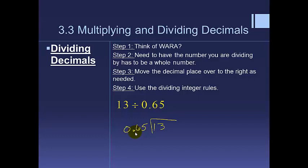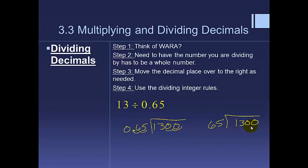Let's try 1.3 ÷ 0.65. I need to move the decimal in 0.65 two places to the right, multiplying by 100. So I move both decimals two places: 0.65 becomes 65 and 1.3 becomes 130. Rewriting: 65 divided into 130. I know 65 times 2 is 130, so the answer is 2. It might seem odd that dividing gives a bigger number, but you're cutting something into very small sections and counting how many — here, you have 20... actually 2 of those sections.